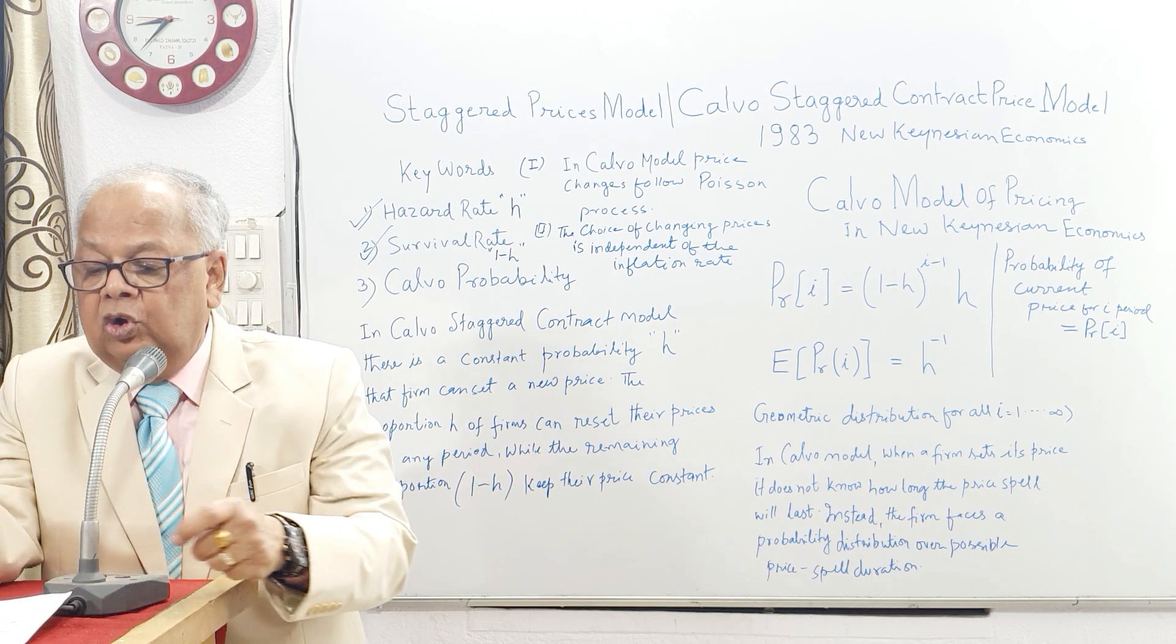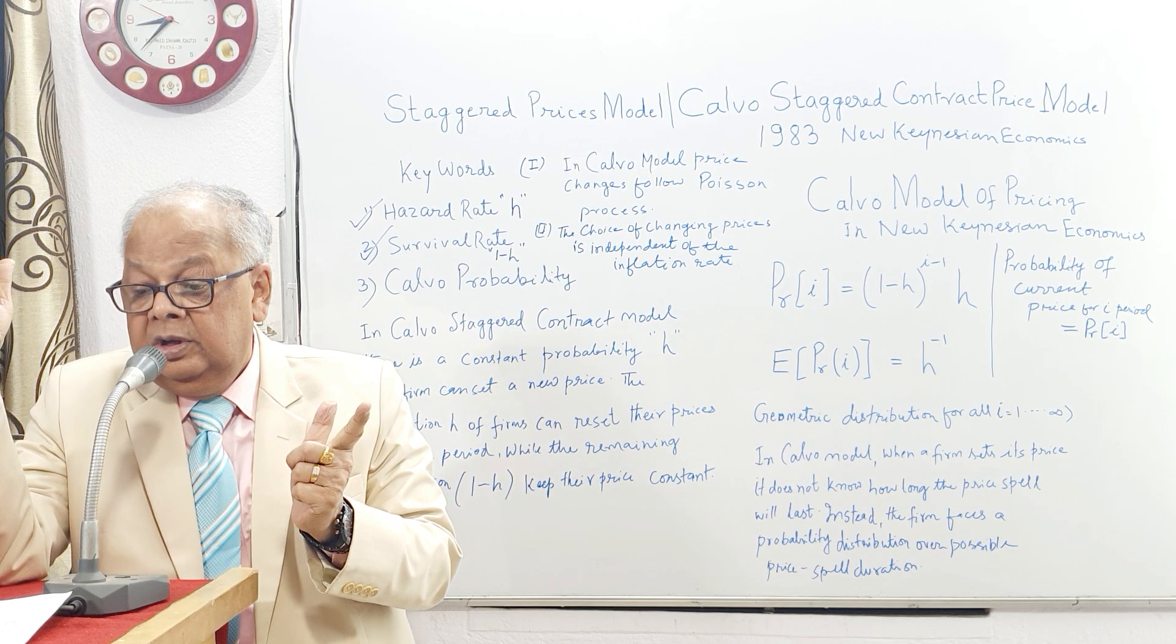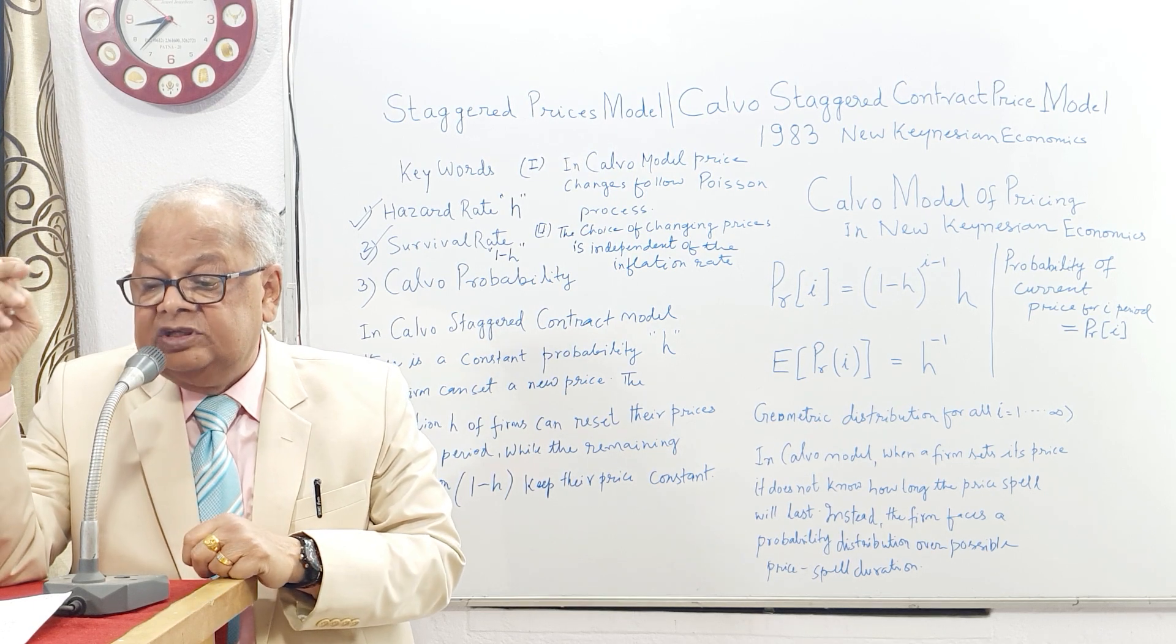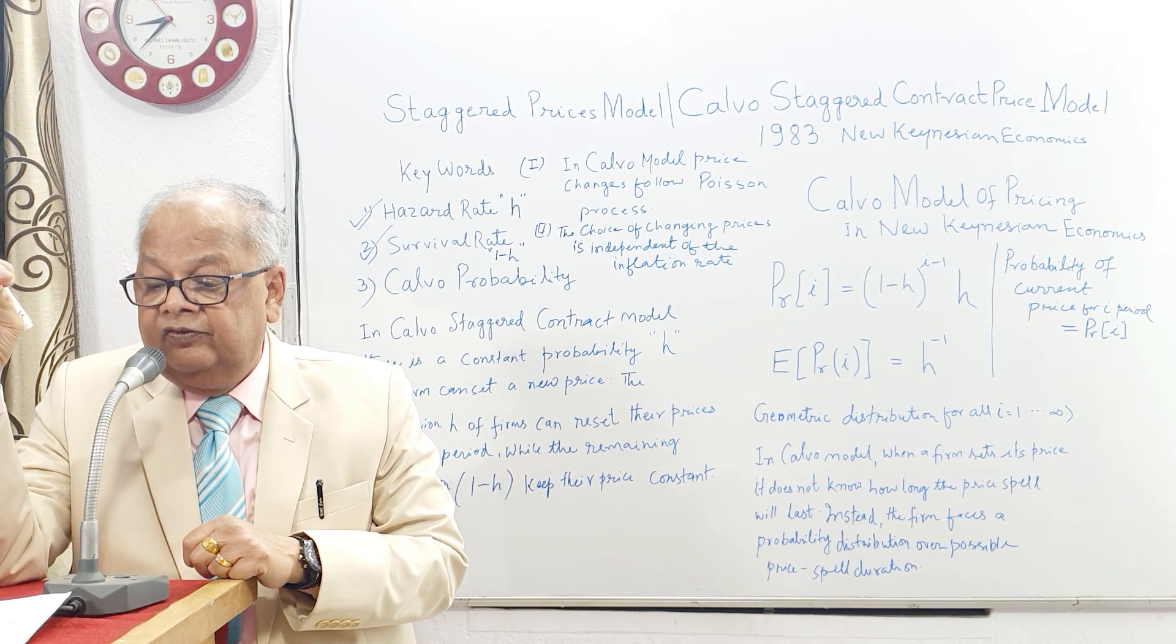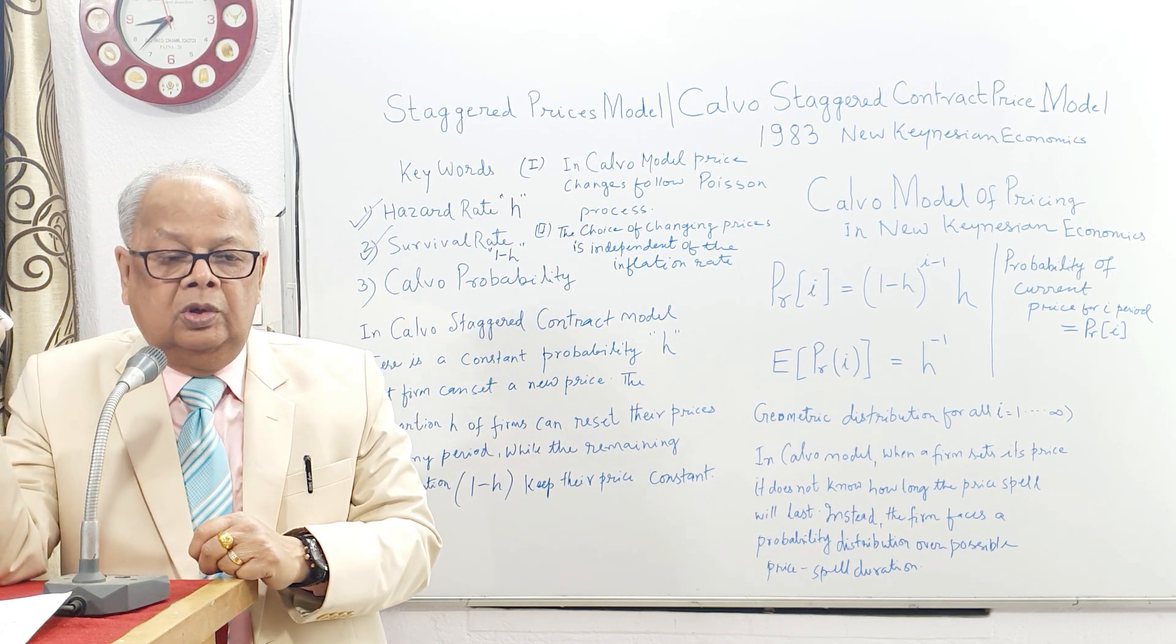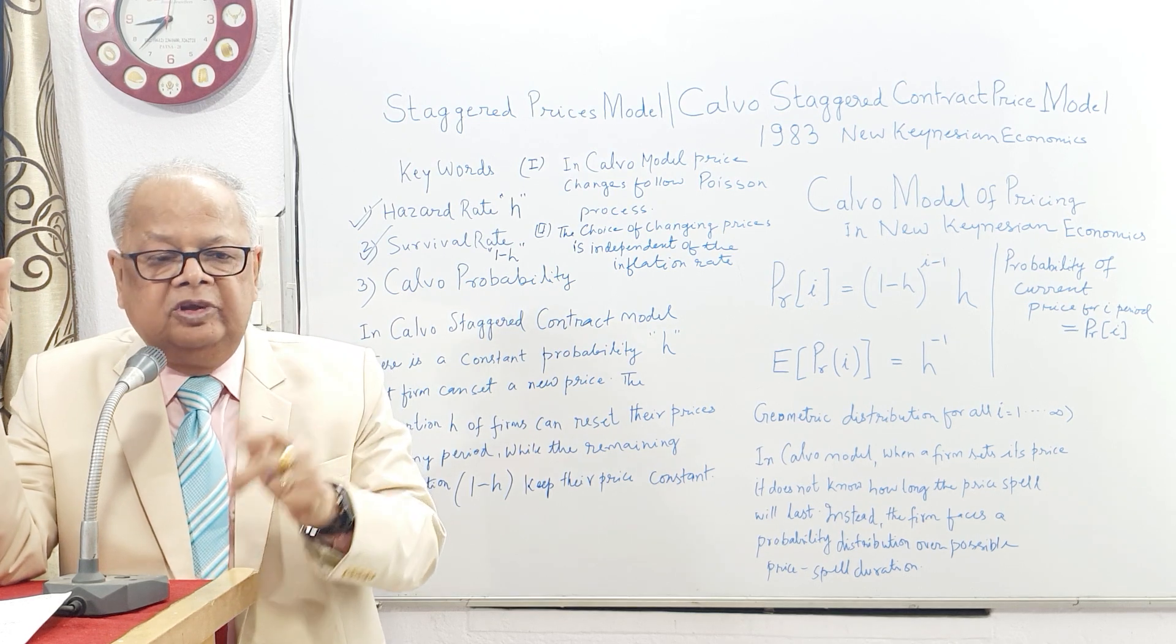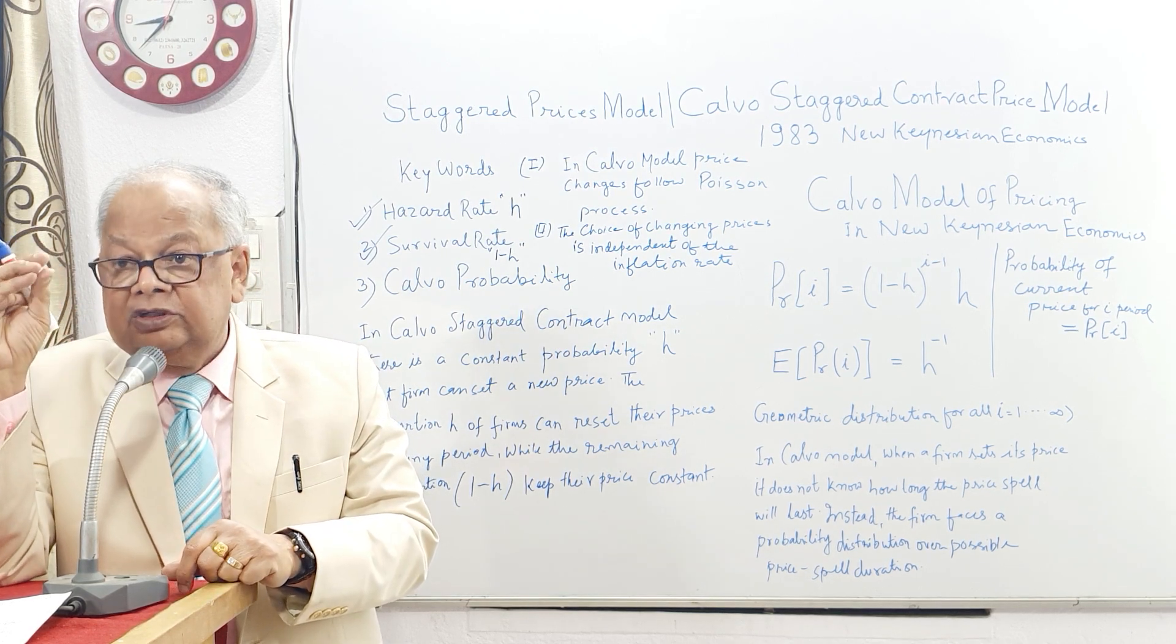Complete nominal rigidity occurs when a price is fixed in nominal terms for the relevant period of time. Calvo says that no, all complete nominal rigidity may not be there—there will be some hazard rate.